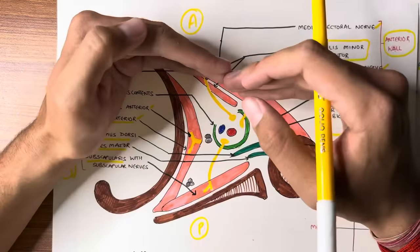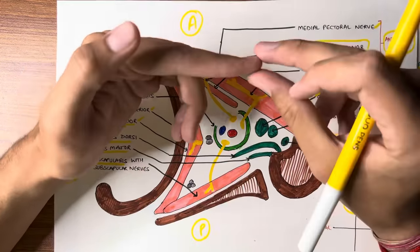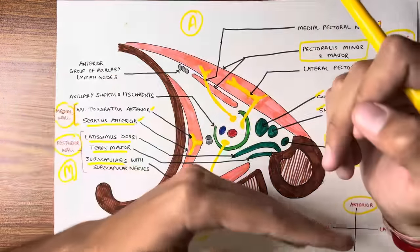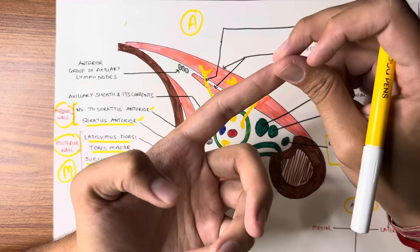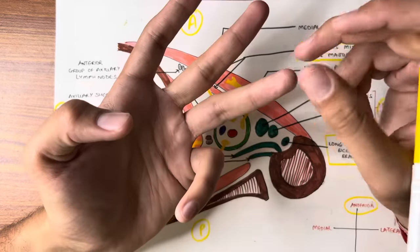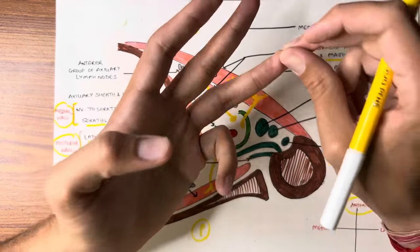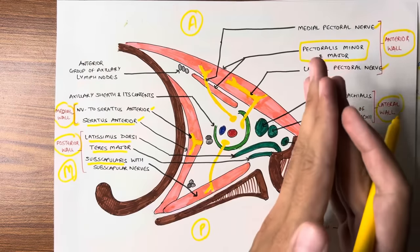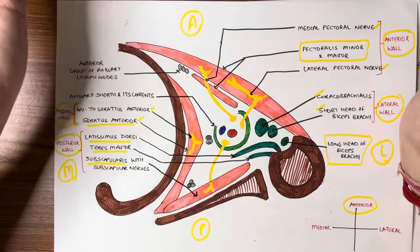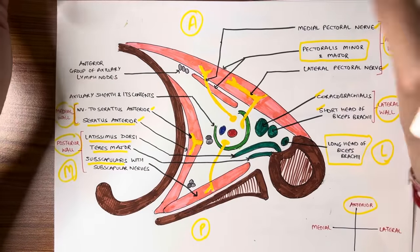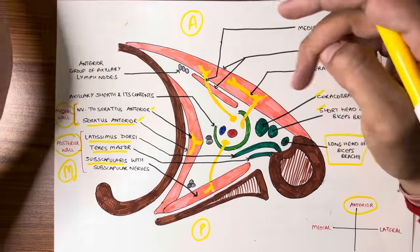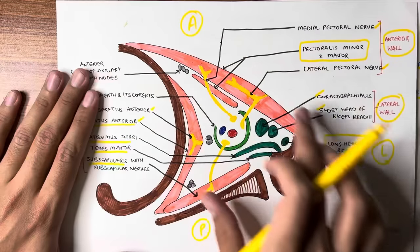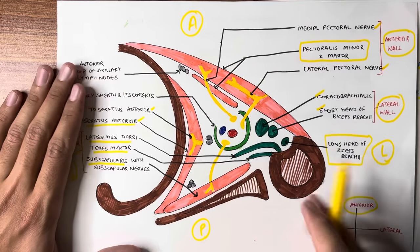So to summarize: the posterior wall has three muscles — subscapularis, teres major, and latissimus dorsi. The anterior wall has two muscles — pectoralis major and pectoralis minor. The medial wall has one muscle — serratus anterior. And the lateral wall muscles are: short head of biceps brachii and coracobrachialis.